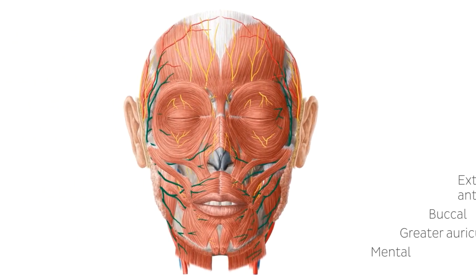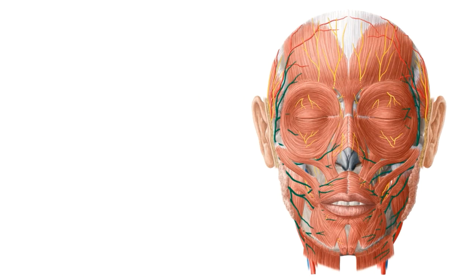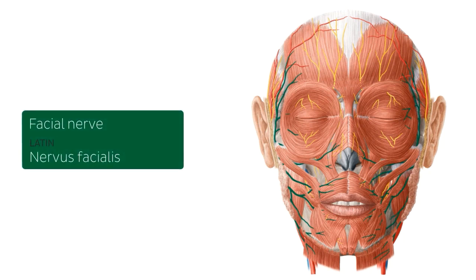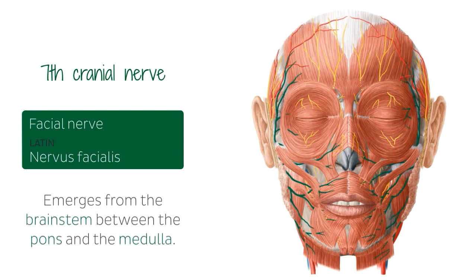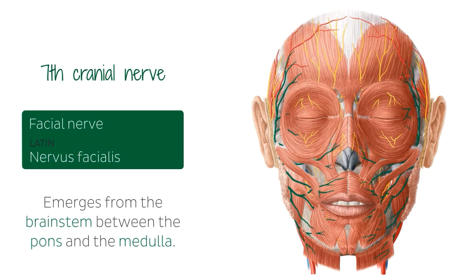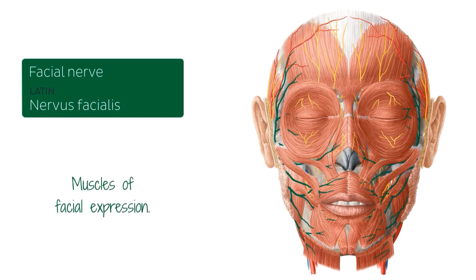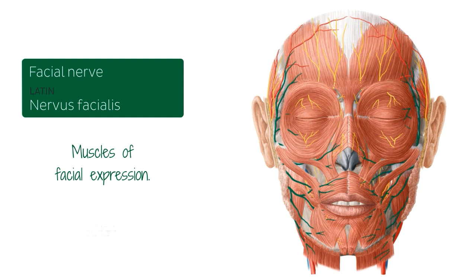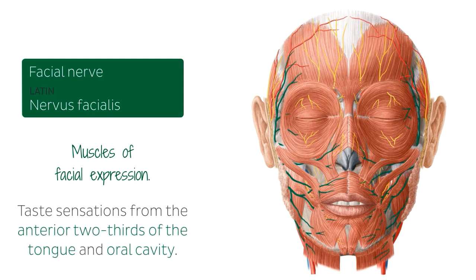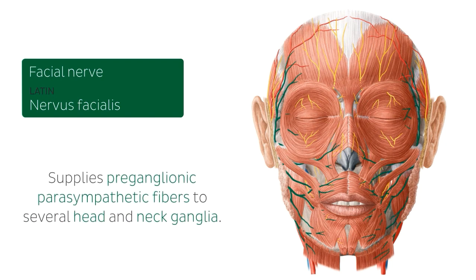Let's start with the very first one on the list, highlighted in green. This is known as the facial nerve — you have one on each side of your head. They are also known as the seventh cranial nerves. The facial nerve emerges from the brain stem between the pons and the medulla. This nerve controls the muscles of facial expression and conveys taste sensation from the anterior two-thirds of the tongue and oral cavity.